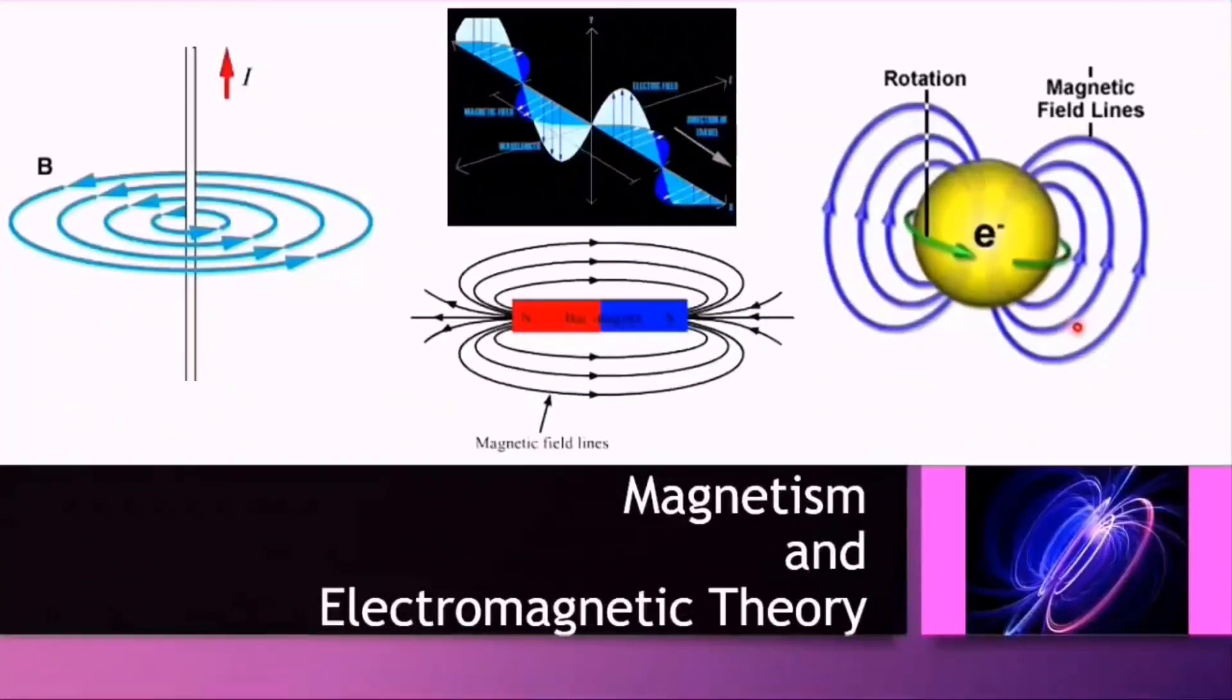Similar to how a planet orbits the sun and rotates on its own axis as well, an electron orbits the nucleus and spins on its own axis. The magnetic field is due to both the orbital motion as the electron orbits the nucleus and the spin of each electron along its own axis.